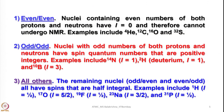We must first understand which nuclei exhibit NMR. Nuclei containing even numbers of both protons and neutrons have nuclear spin I equals 0 and therefore cannot undergo NMR. For example, 4He, 12C, 16O, or 32S — all have even numbers of protons and neutrons, so I equals 0 and they cannot be used for NMR purposes.